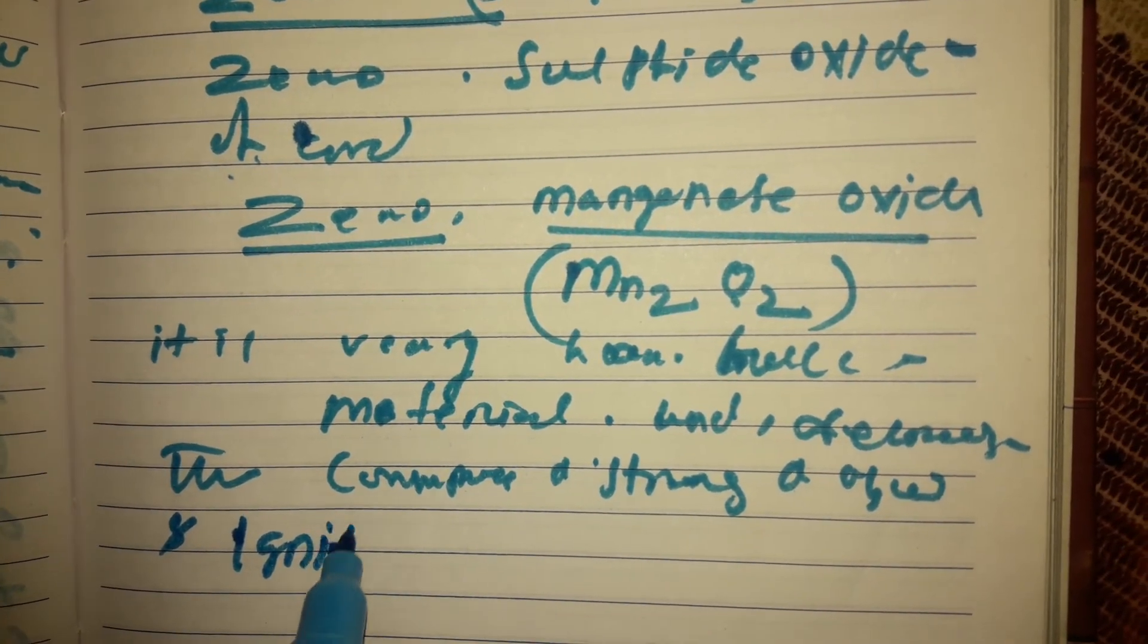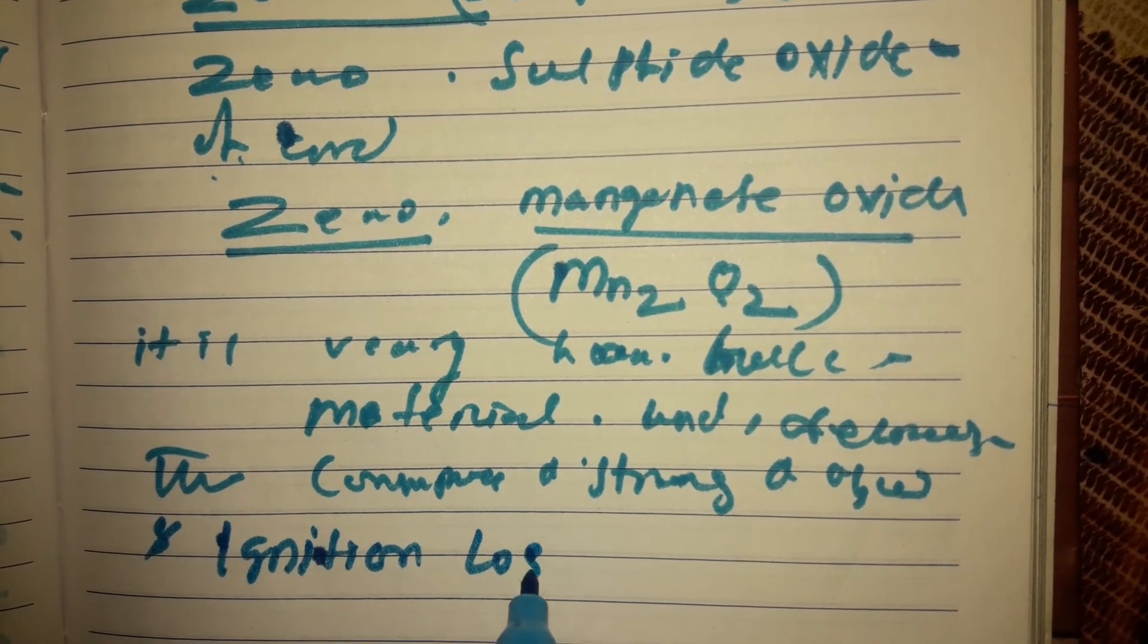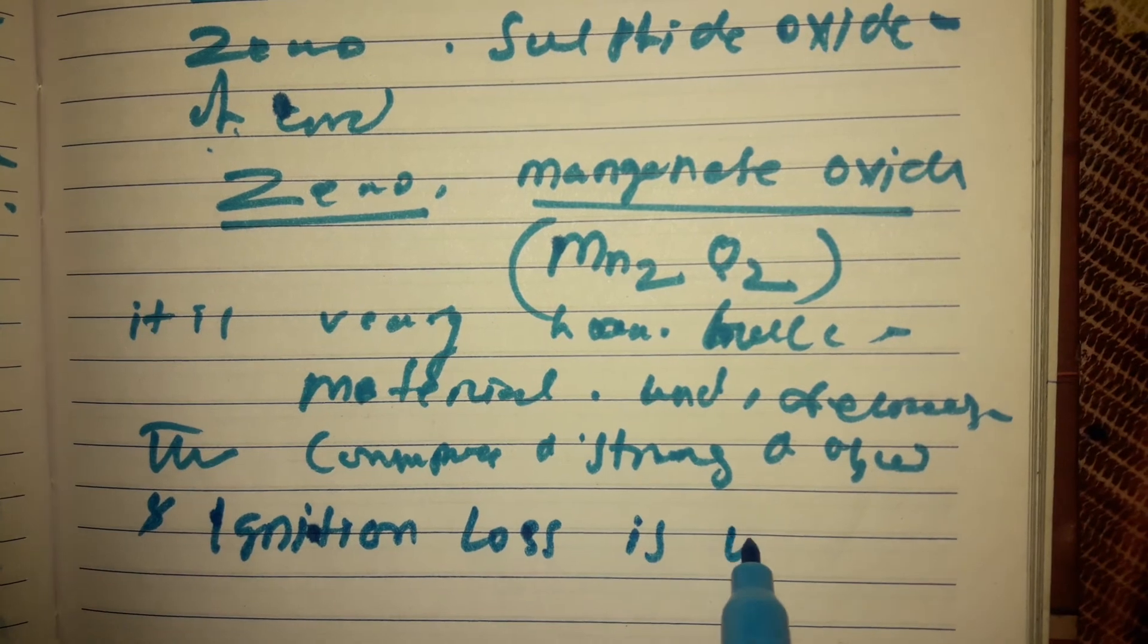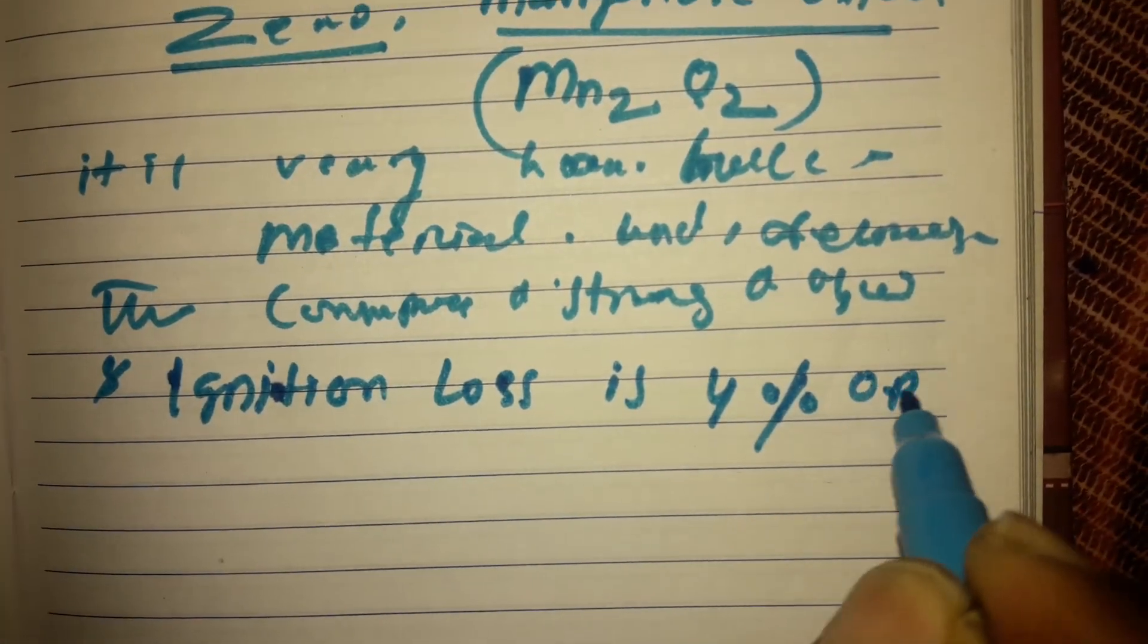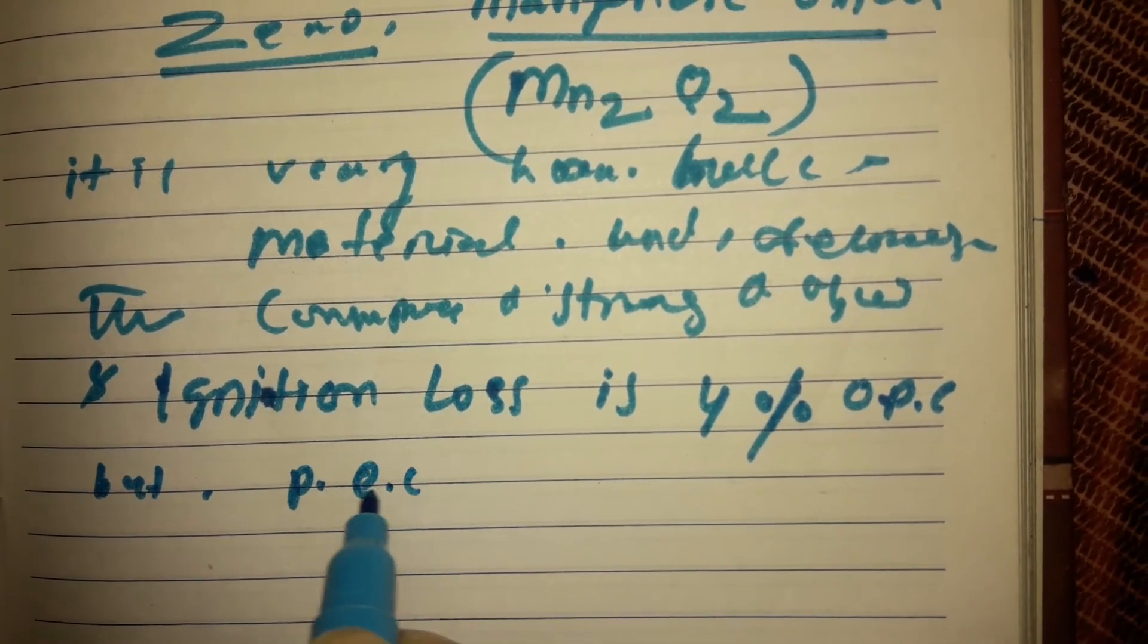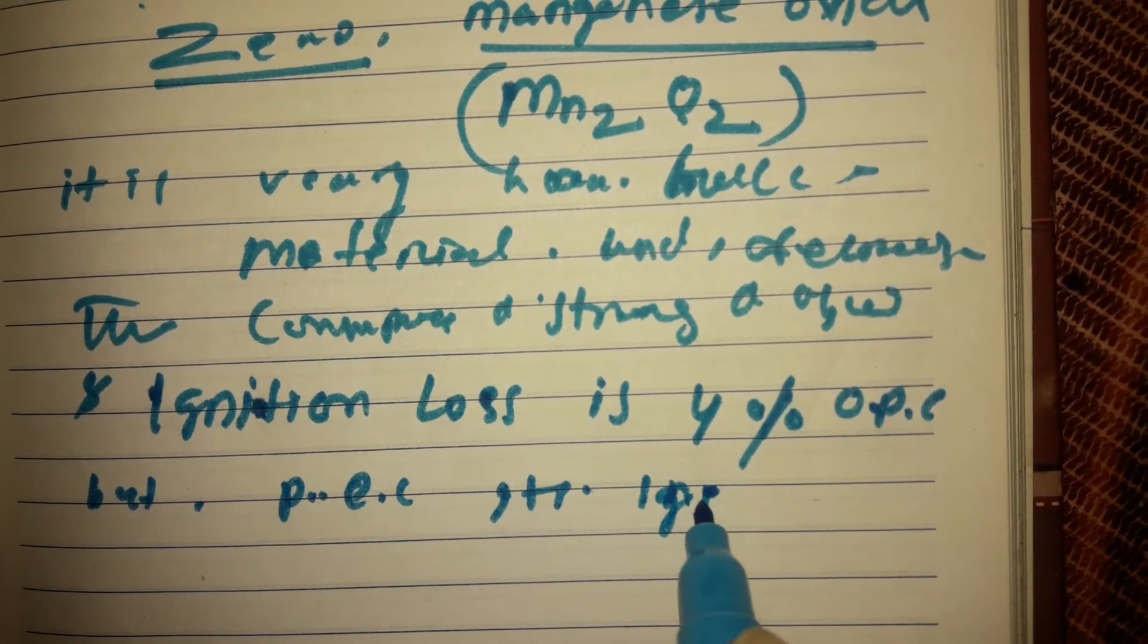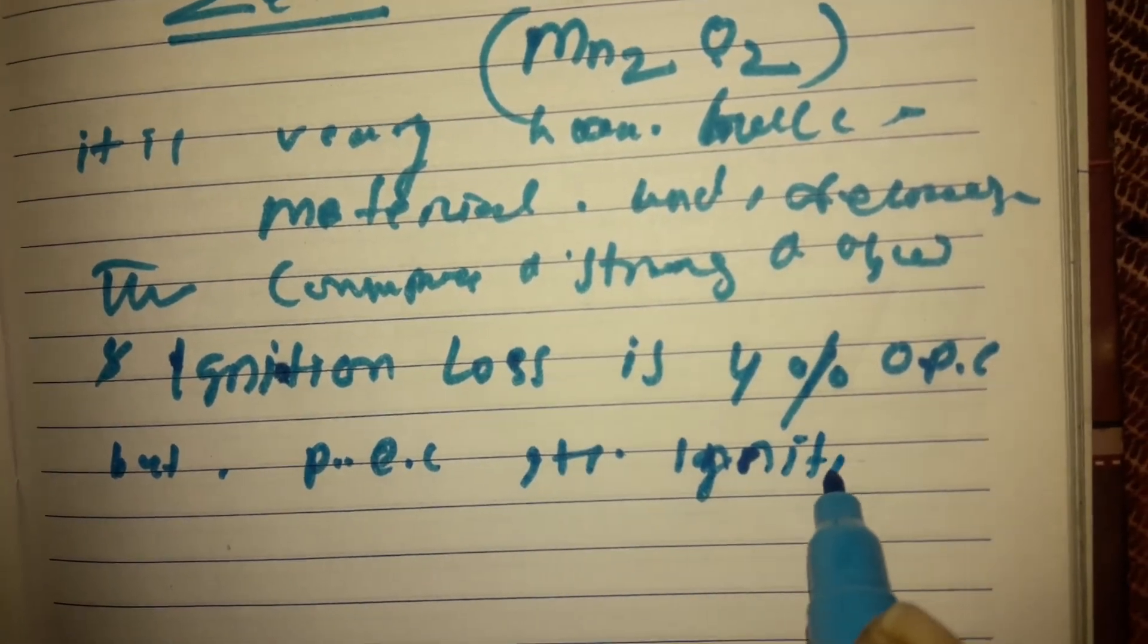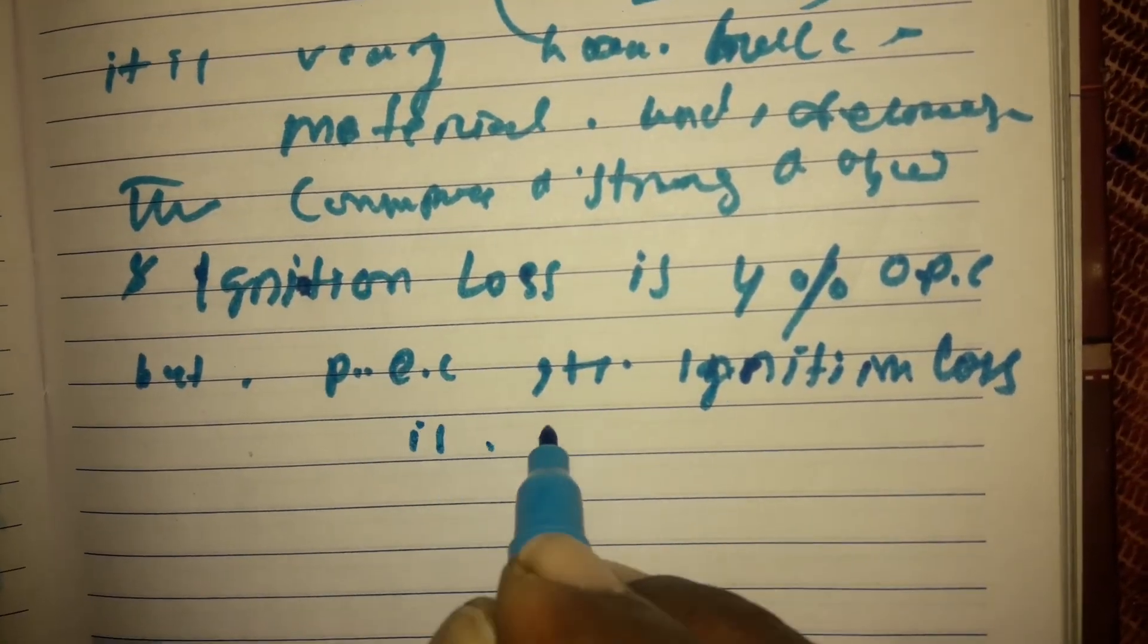Ignition loss is 4 percent in OPC, but in PPC ignition loss is 5 percent.